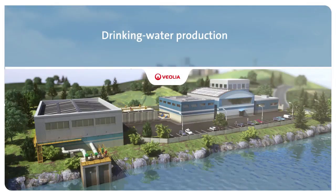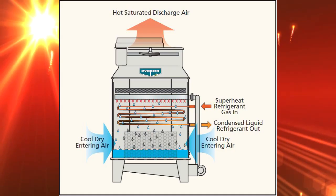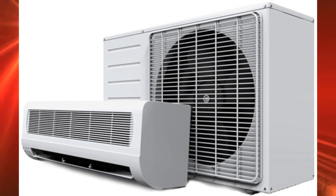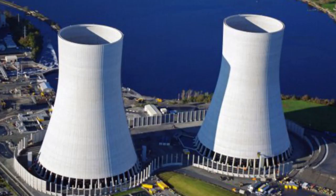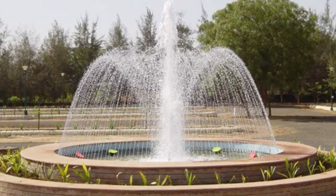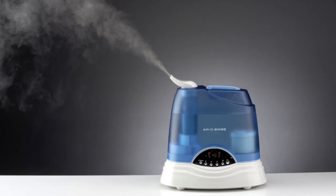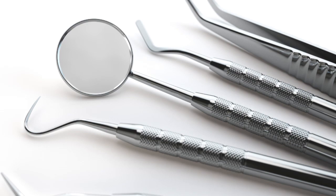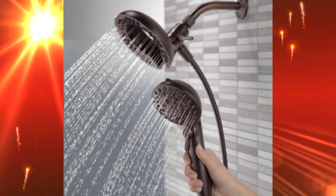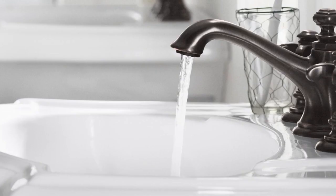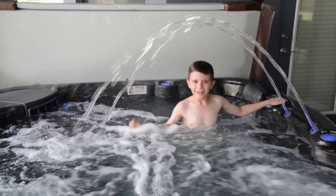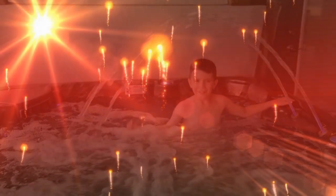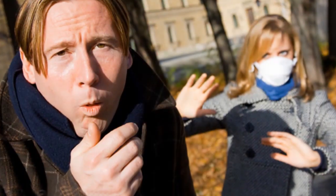Legionella is isolated from freshwater environments such as water distribution systems, evaporative condensers, air conditioning units, cooling towers, fountains, humidifiers, dentistry tools, shower heads, faucets, and whirlpool spas. They are also airborne.